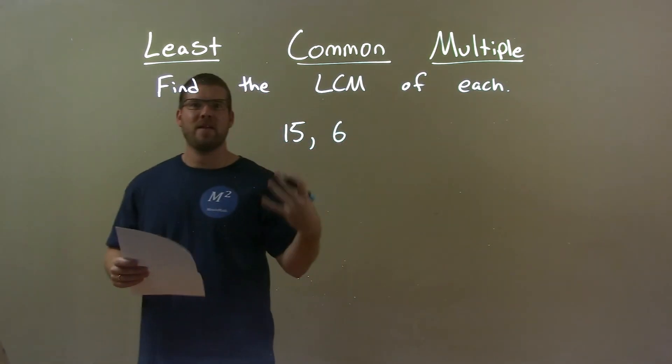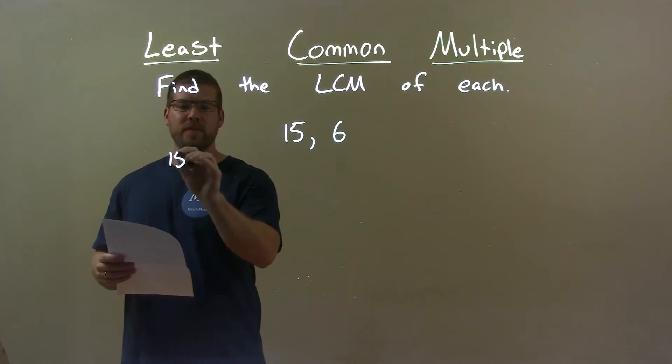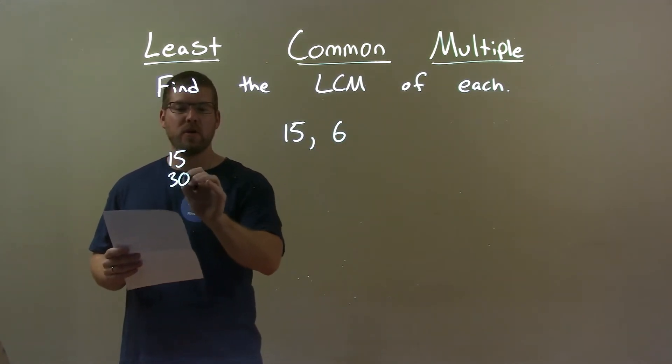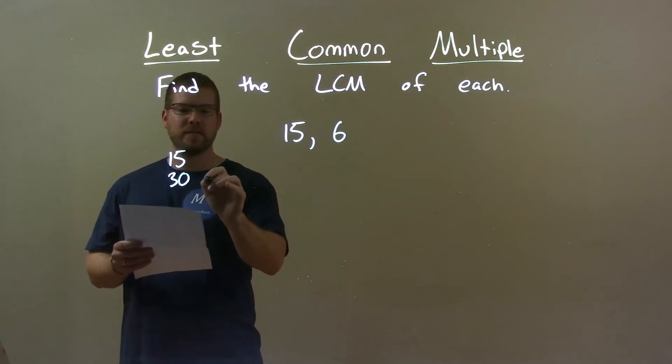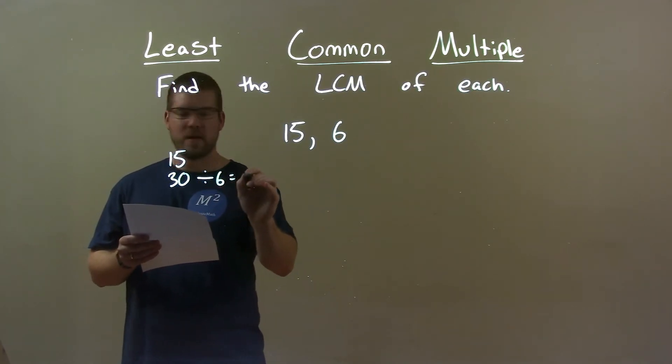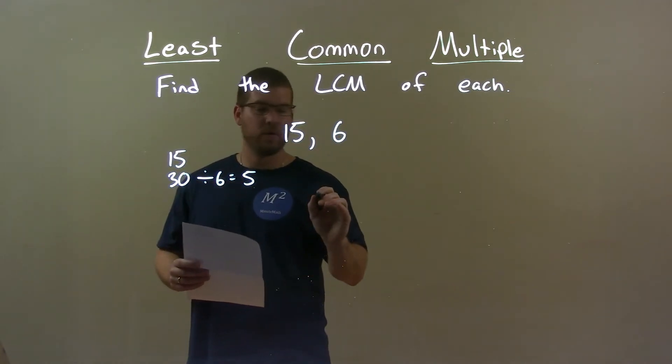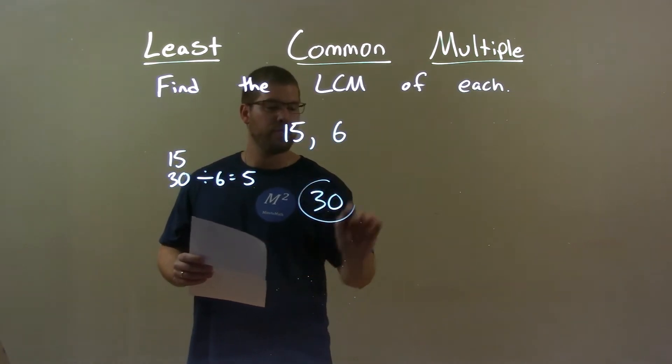The largest number is 15, and I find the multiples of that. Well, 15, does 6 go into 15? No. Next multiple is 30. 6 goes into 30, right? 30 divided by 6 comes out to be 5, goes in evenly, and so our smallest multiple there is 30.